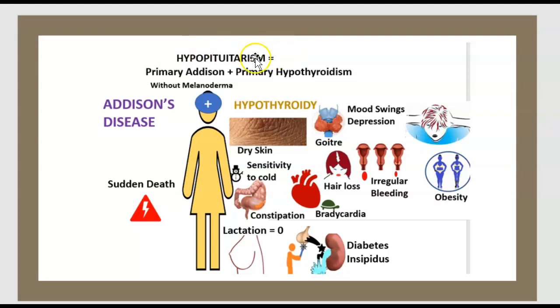Hypopituitarism is like primary Addison disease but without melanoderma, plus primary hypothyroidism.